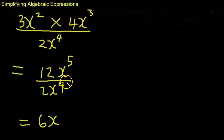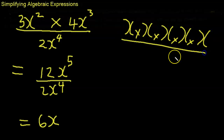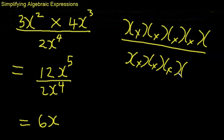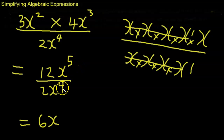So it's x to the power of 1, and the answer is 6x. To see why: x to the power of 5 means multiply x five times, and x to the power of 4 means multiply x four times. Those 4 x's divide into themselves giving 1, leaving just one x on top. So x to the power of 5 over x to the power of 4 is just x.